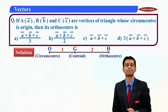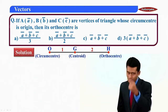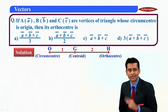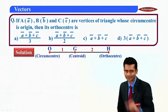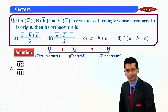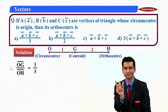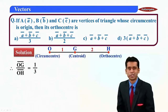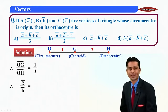I have drawn the diagram here. According to the question, the circumcenter is the origin O, the centroid is G, and the orthocenter is H. So I can write OG-bar upon OH-bar is equal to 1 upon 3, meaning g-bar by h-bar equals 1 by 3.